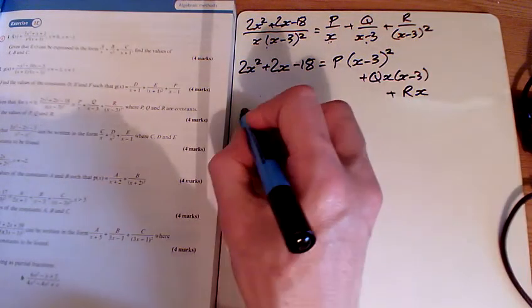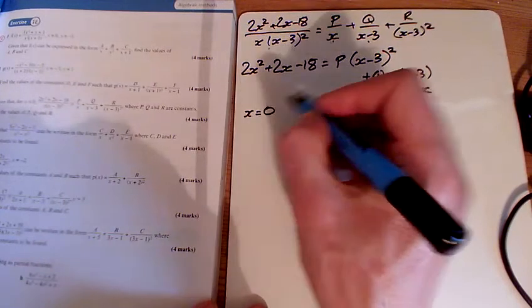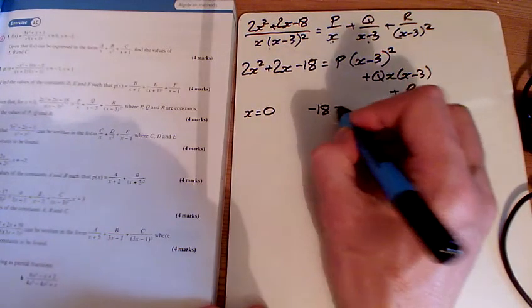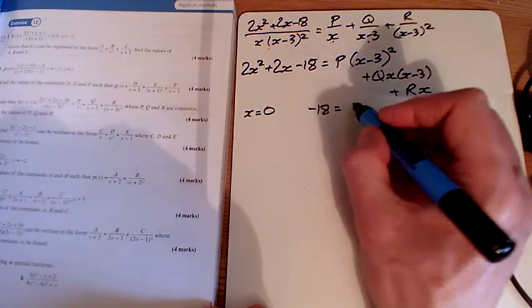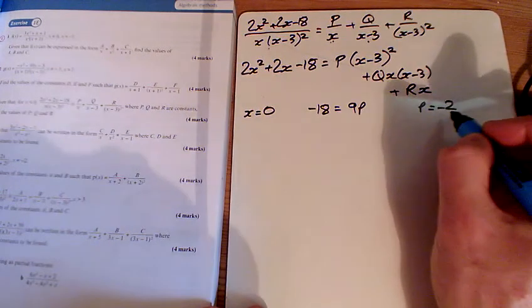And so when x is equal to, should we go x equals 0 first? x is equal to 0, we get minus 18 equals 9p, and so p is equal to minus 2.